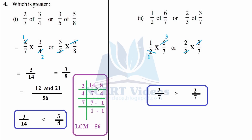We cannot compare unlike fractions, so we take LCM. Two sevens are 14, two twos are 4. The LCM of 14 and 8: 4 times 2 is 8, 8 ones of 56. Common denominator is 56. 14 fours are 56, so 4 threes are 12. 8 sevens are 56, so 7 threes are 21. Denominator is now the same.